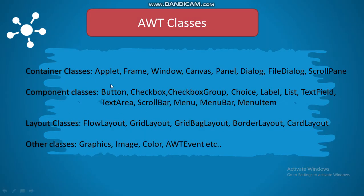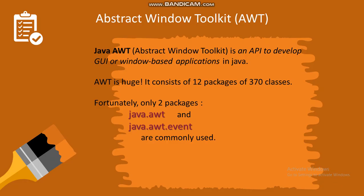Generally, the AWT package contains the classes required to create containers, classes required to create components, classes required to define the layouts, and some other classes used to handle images, define colors, and manage events. This is the AWT — Abstract Window Toolkit — and these are the classes its package contains.